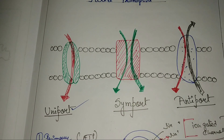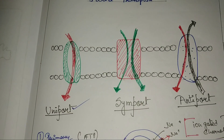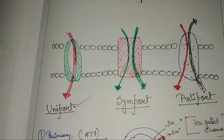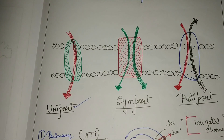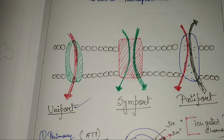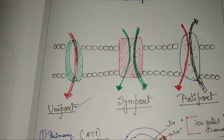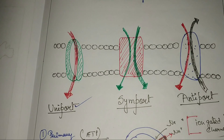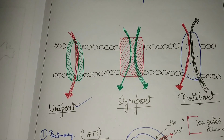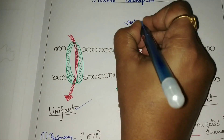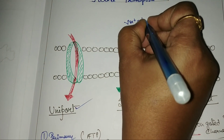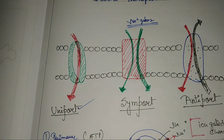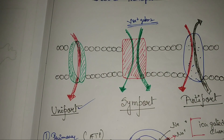Symport is a type of secondary transport. Why? Because there are two molecules involved. When two molecules move in the same direction, it is known as symport. In the case of sodium and glucose, this is what happens — both molecules move together in the same direction.